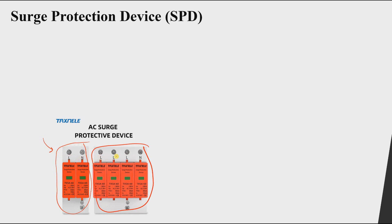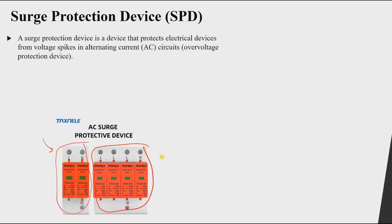For three phase systems we have L, L, L, N — three phases and neutral. The surge protection device protects electrical devices from voltage spikes, so it is used to protect against overvoltage phenomena and acts as an overvoltage protection device.